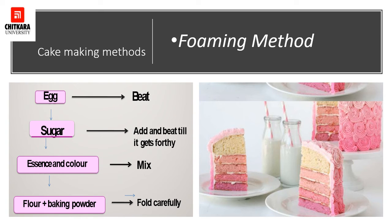The foaming method, also known as the sponge method, is used for all sponge-type cakes. In this process we use egg, sugar, flour, and baking powder, along with any required flavor, essence, or color. Both whole eggs and egg whites are beaten with sugar to aerate properly. Then the required essence or color is added, followed by flour and baking powder as needed. This is baked at 150 degrees Celsius. This method is basically used for sponge making.